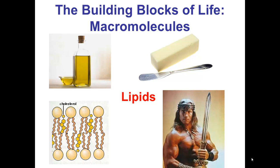Our second group of macromolecules are the lipids. Lipids include fats and oils like the olive oil and butter shown here. However, lipids are also very important for formation of biological membranes. So cholesterol as well as the phospholipids that make up the plasma membrane are examples of lipids. I've also got a picture of Arnold Schwarzenegger here, because steroid hormones also belong to the lipid family of macromolecules. These include testosterone, which he clearly has a lot of, as well as estrogen.